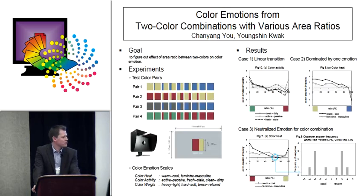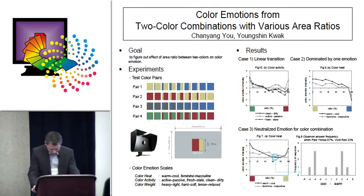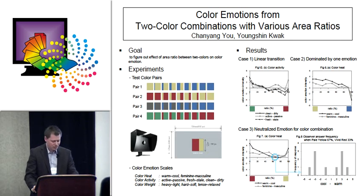The first step is to figure out the effect of area ratios between two colors of color combinations. Tested color patterns are prepared like this. All these color pairs are chosen in an excess color system, and area ratios between two colors are prepared like this. Each was shown on an LCD monitor.